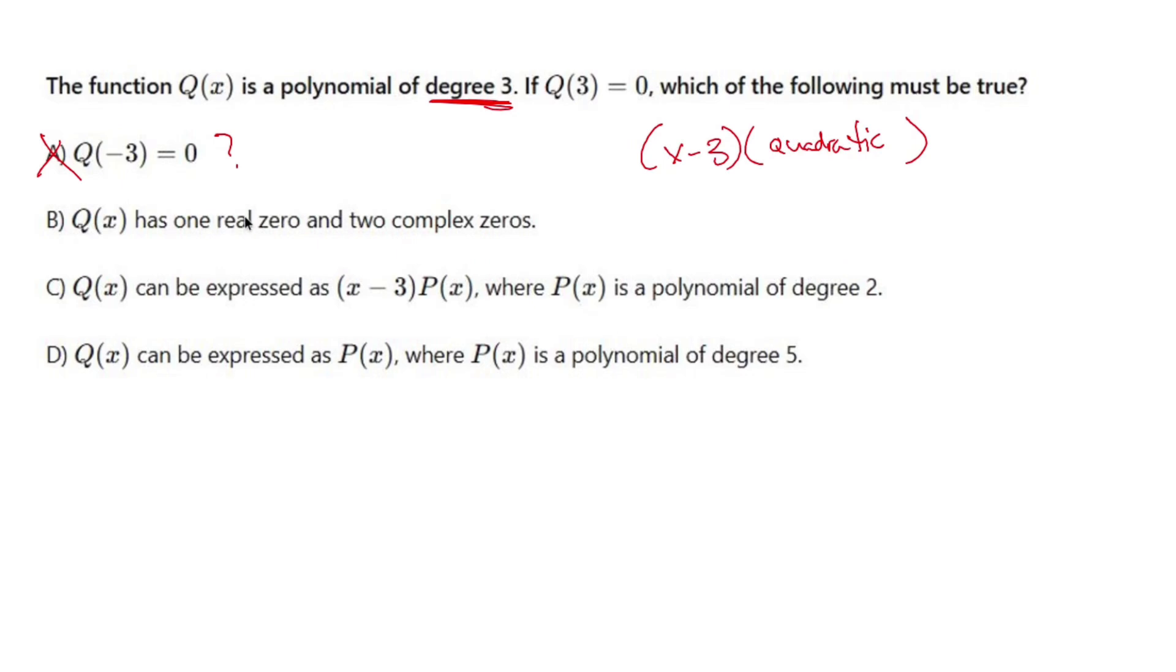Q(x) has one real zero and two complex zeros. I don't know. I just know it's quadratic. That could be the case. If I use the quadratic formula on this guy, I could get negative square roots, but I don't know if that's going to happen or not. I can't prove anything, so B is not it.